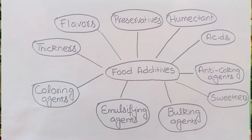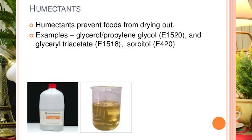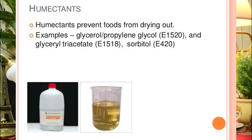Now we will see Humectants. Humectants are substances that save food from drying out. Important chemical substances used as humectants include glycerol and lactitol. They are important for maintaining the wetness or moisture level of food products.